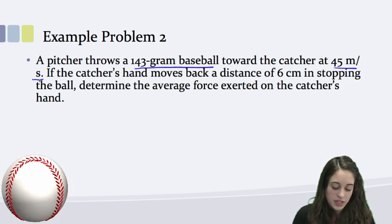My second example problem has to do with a pitcher who throws a 143 gram baseball toward a catcher at an initial velocity of 45 meters per second. And if the catcher's hand moves back a distance of 6 centimeters in stopping the ball, I want to determine the average force exerted on the catcher's hand.